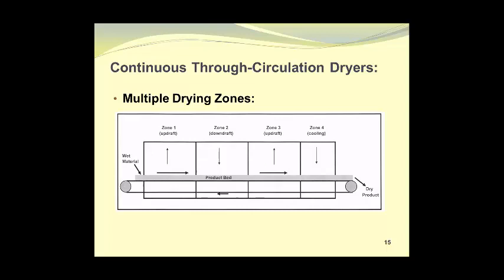Multiple zone dryers work in the same way, however they have air flow in different directions. In the first zone, the air is going in an upwards direction. In the second zone, the air is traveling downwards. In the third zone, the air is traveling upwards as well. So this gives us three zones of heated air: an updraft, a downdraft, and a third updraft zone. The fourth zone is a cooling zone to reduce the temperature of the heated product before it is discharged into the ambient air.